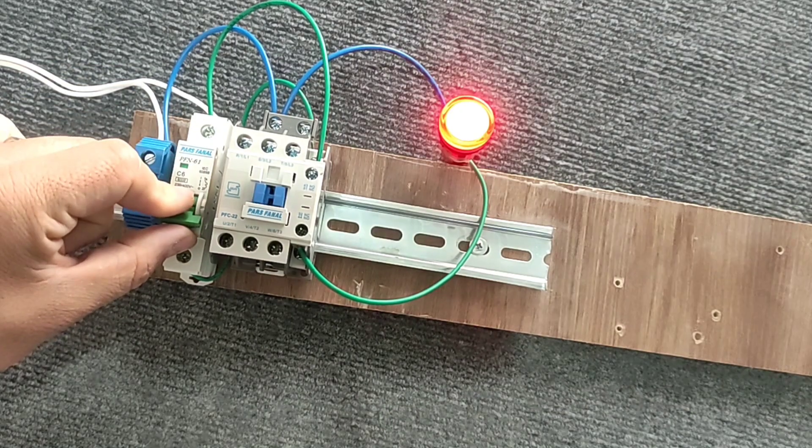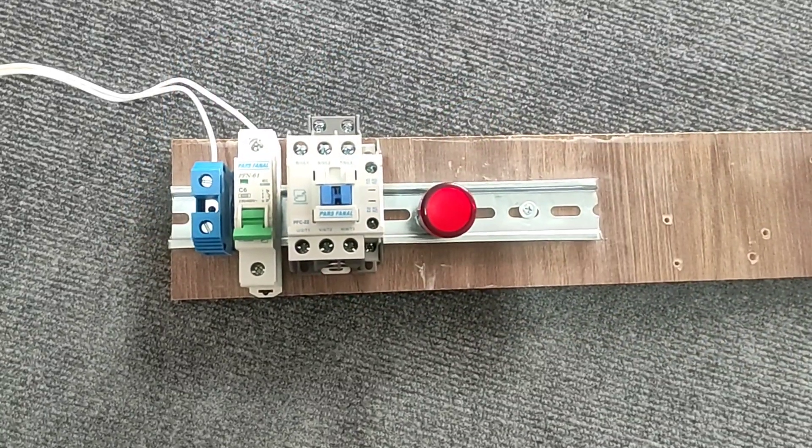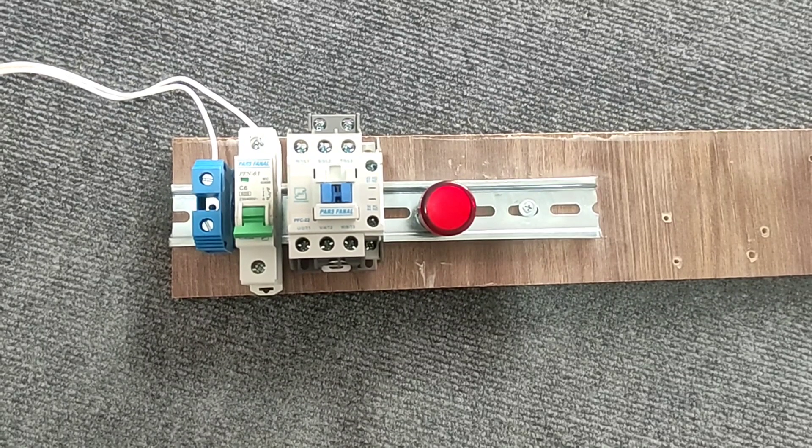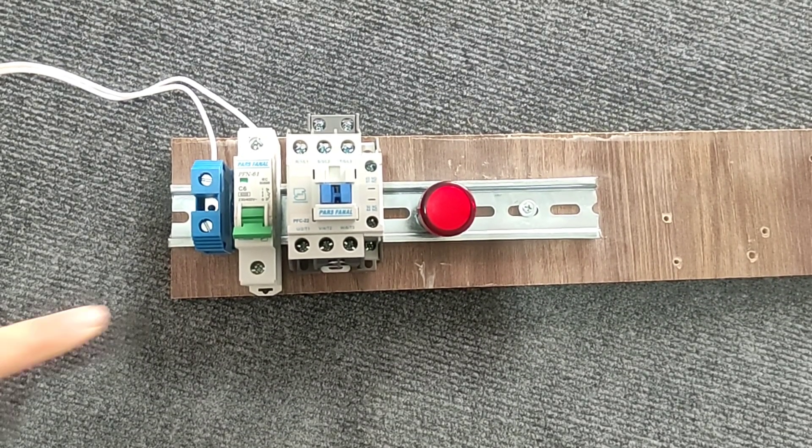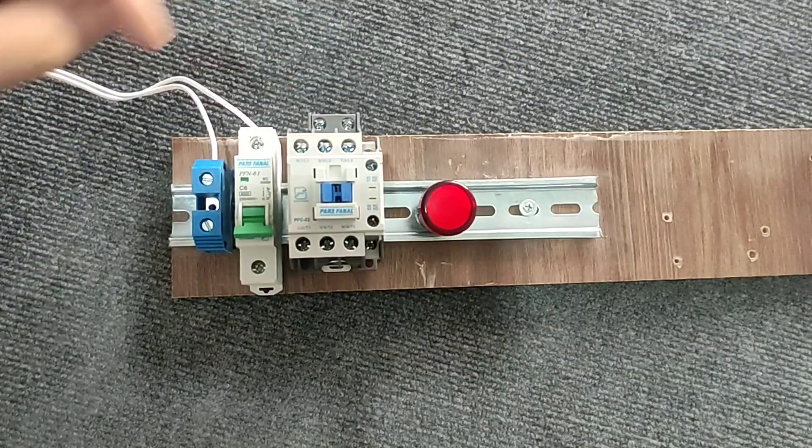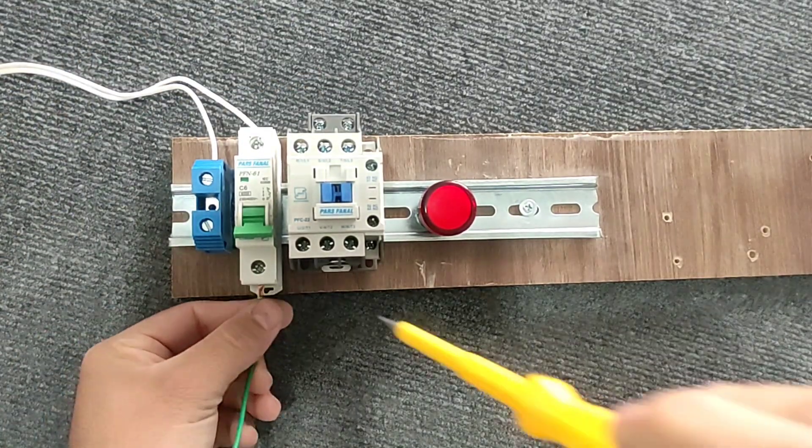At first we need a phase and null which we have connected to the miniature switch and the null terminal. Then we connect the phase wire from the MCB switch output to the conductor coil.